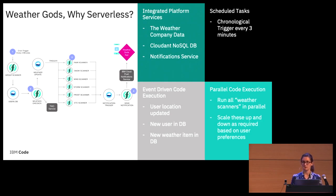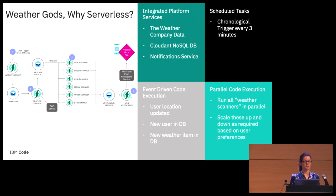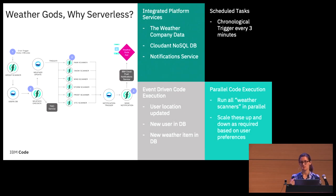Once the scanner finds interesting data for the user, it sends a notification using the push notification service. They were able to easily consume integrated platform services: a notification service, a database as a service, and the Weather Company data API. Their code was regularly scheduled to run every three minutes via a trigger, and a lot of their code ran in reaction to events. They wanted to run weather checks when a new user location is updated, react to new users in their database, and react when there's a new weather item of interest. The scanner section could execute in parallel and independently — if no one is interested in a particular weather event, that code isn't being called and they're not being charged for it.